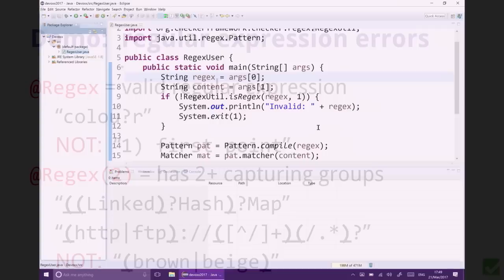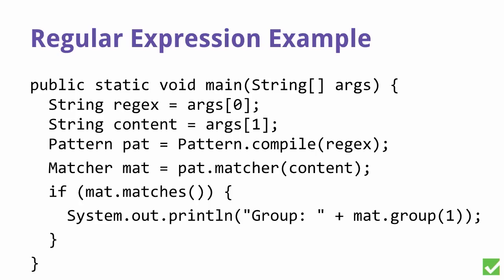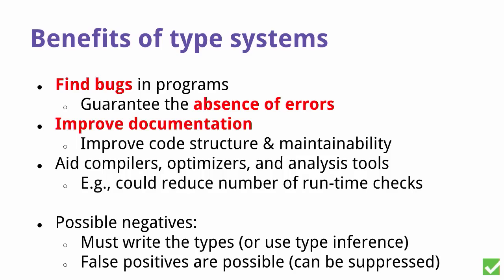We fix the problem by adding a check to make sure the string is a valid regular expression before we compile it. We have a utility method that ensures the string is a valid regular expression, and if it's not, we output a user-friendly message. Running the checker again — it's now happy with no warnings. We make sure that the string is a regular expression with at least one capturing group. The nice thing here is that we don't need any explicit annotations; all annotations are automatically inferred by the type system.